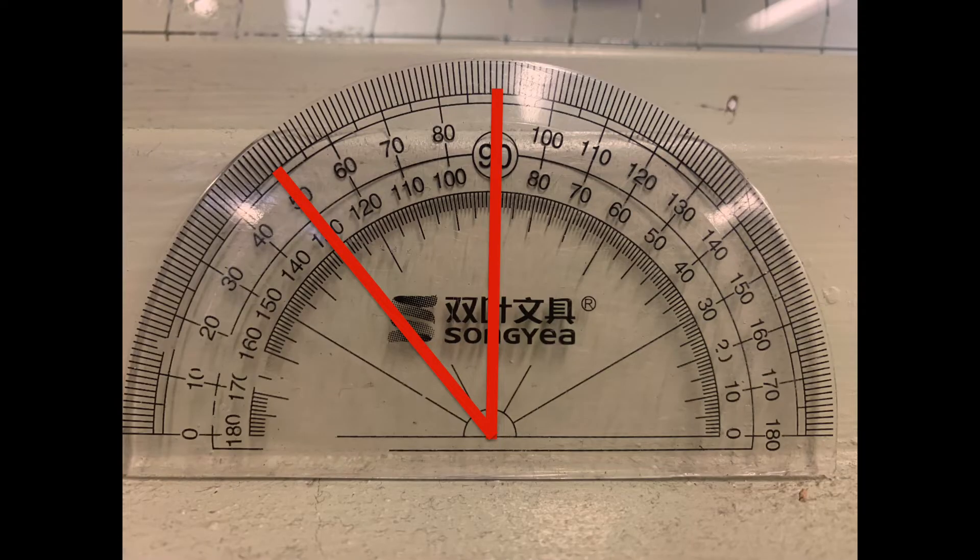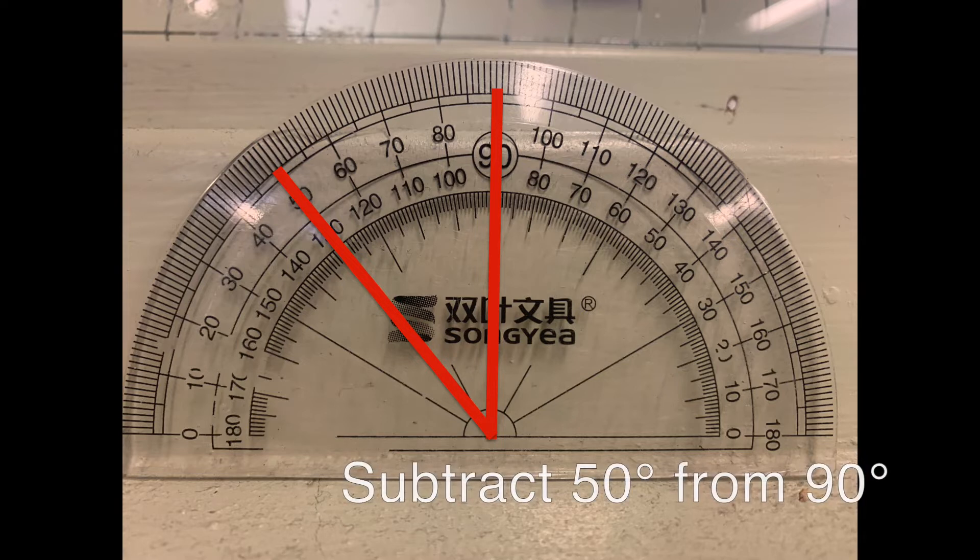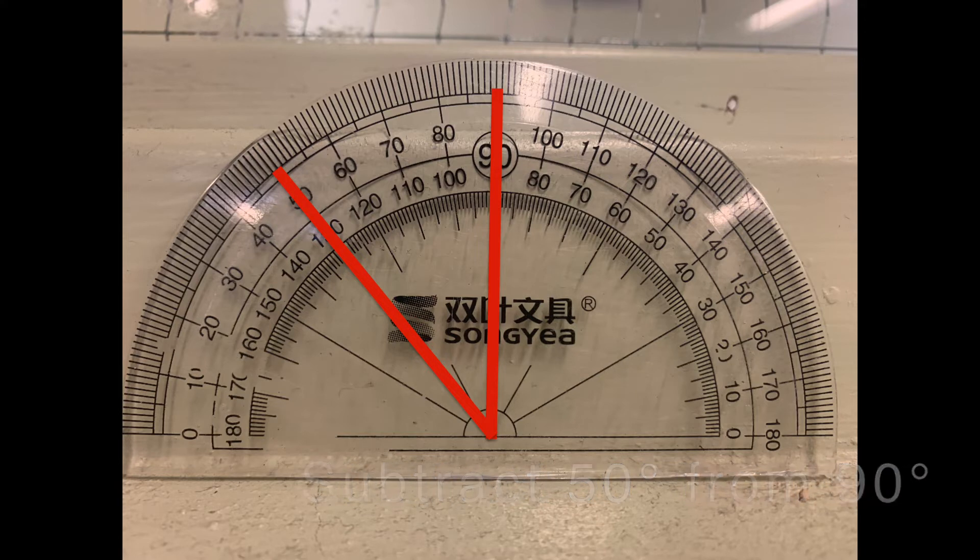The angle that we got when we were measuring using our clinometer outside was 50 degrees. You're actually going to subtract 50 degrees from 90 degrees to give you the angle that you're going to use in your equation. In this case this will give us 40 degrees.